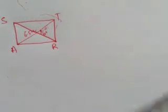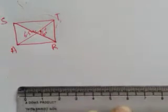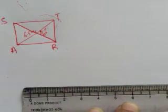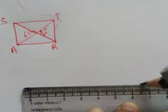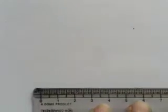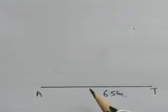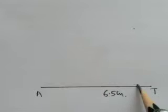I would like to start with AT, 6.5 centimeters. With the help of a scale and pencil, first of all draw a 6.5 centimeter line segment. Don't forget to do the naming. Now again, I will use the property of the diagonals.